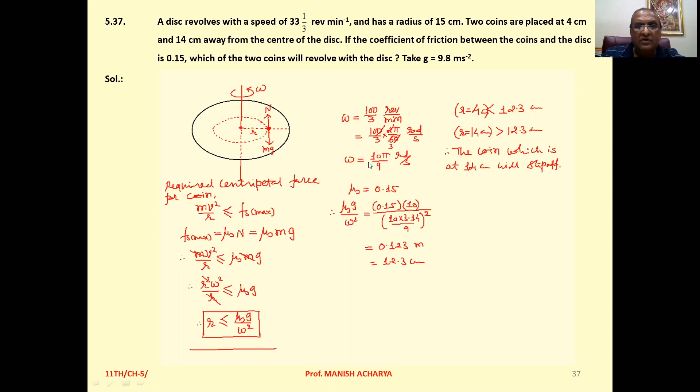μₛ is given to you 0.15. Now μₛ times g upon ω², this right hand side of this particular equation. μₛ, 0.15, g, 10, ω², 10π/9 whole square. So this particular factor turns to 0.123 meter, that is 12.3 centimeter.